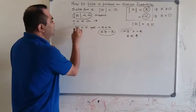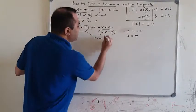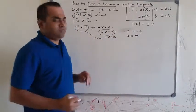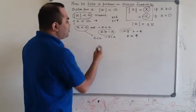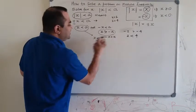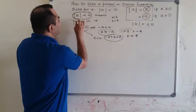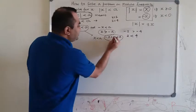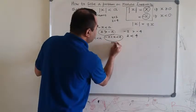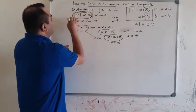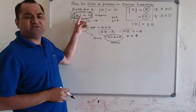So the two solutions are: X is less than a, and X is greater than minus a — which is the same as minus a is less than X. Therefore the combined solution is: minus a is less than X and X is less than a. So if mod X is less than a, then X must lie between minus a and positive a. This is the solution of the given modulus inequality.